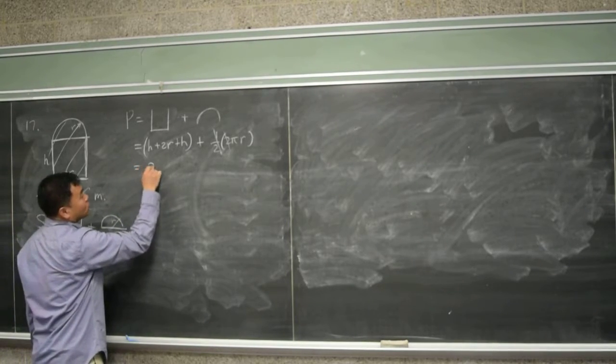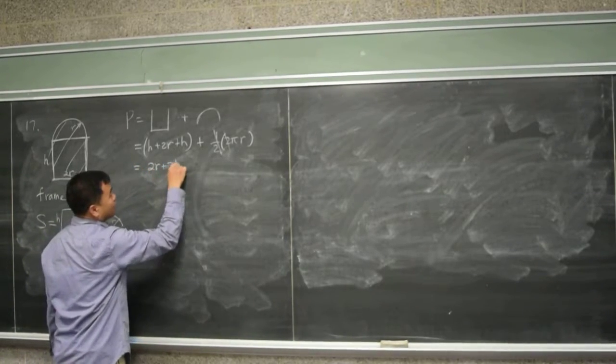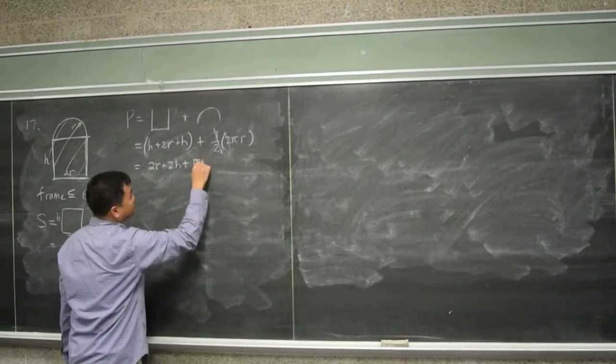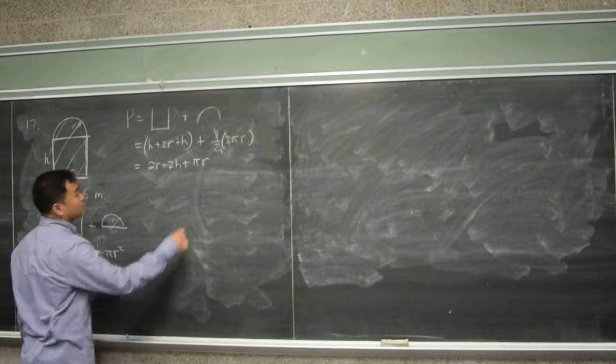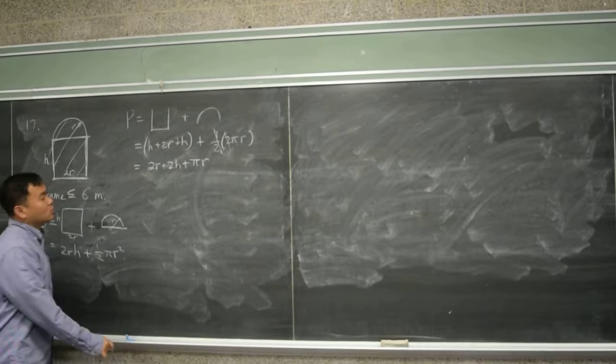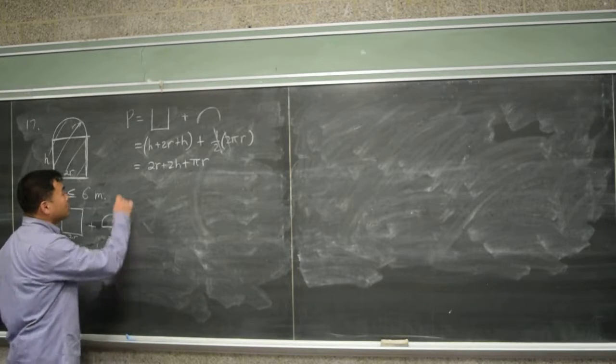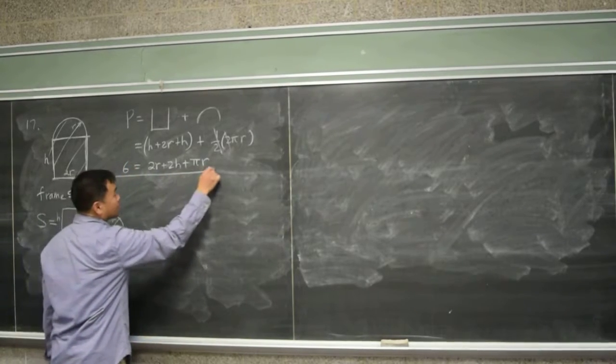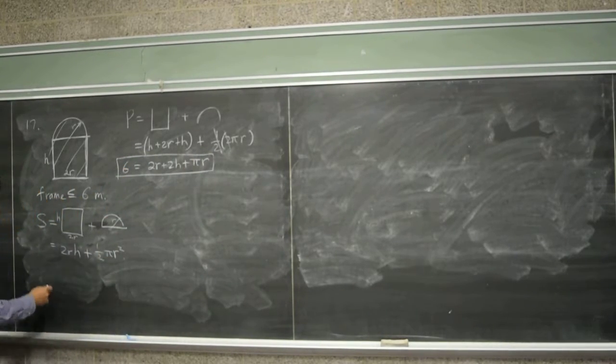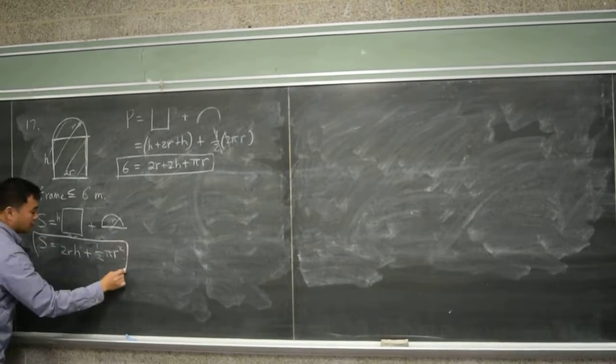Therefore, you have 2R plus 2h plus pi R. What is this equal to? What should it equal to? Six. It has to be equal to six.